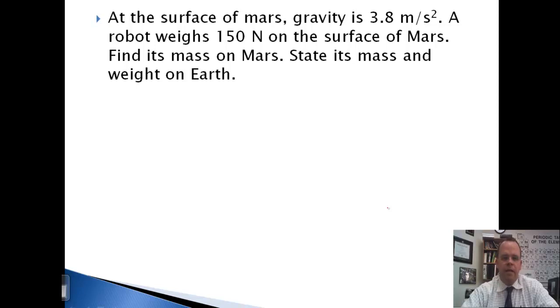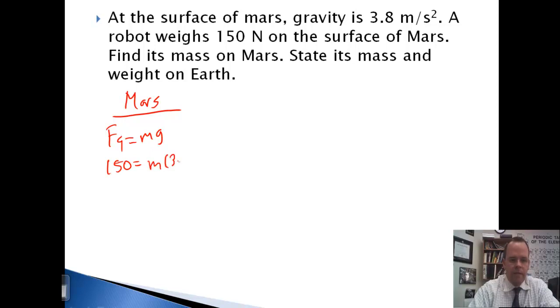The surface of Mars. Gravity is 3.8 meters per second squared. A robot weighs 150 newtons on the surface of Mars. Find its mass on Mars and its mass and weight on Earth. So on Mars, F of G equals MG. 150 equals mass times 3.8. Mass equals 150 divided by 3.8. It comes out to 39.47 kilograms.